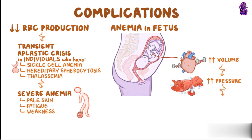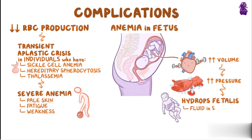This can result in hydrops fetalis, or the abnormal accumulation of fluid in soft tissues. Fetal anemia is also linked to fetal loss, particularly if the Parvovirus B19 infection is in the first half of the pregnancy.